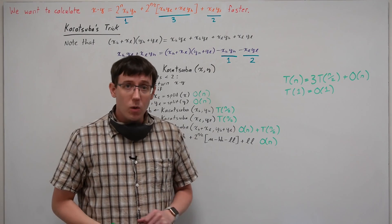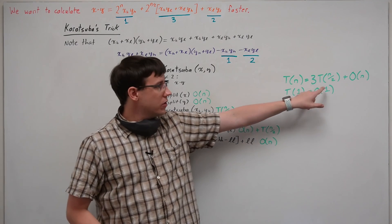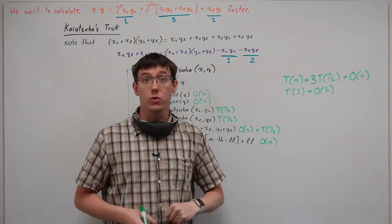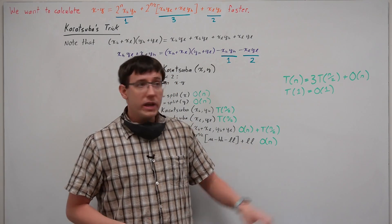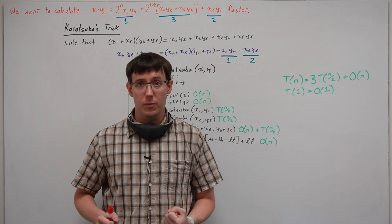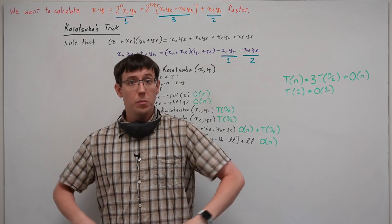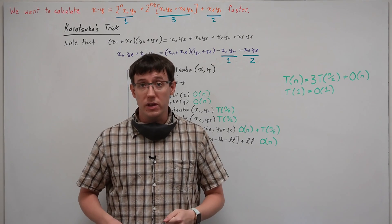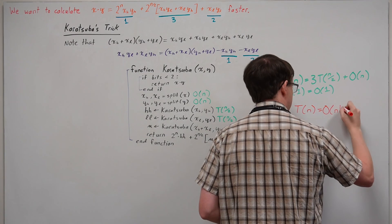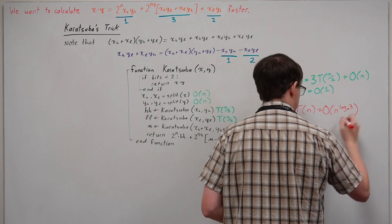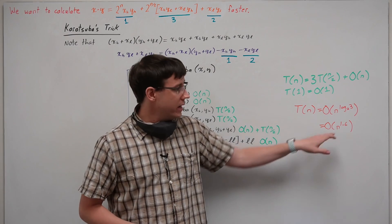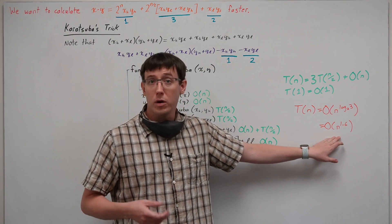So now we get a recurrence where we only have three size n/2 subproblems, and when we solve this recurrence using the general formula, we get O(n^(log₂3)). Since log base 2 of 3 is a little less than 1.6, we've now devised a divide-and-conquer multiplication algorithm that beats out grade school long multiplication.